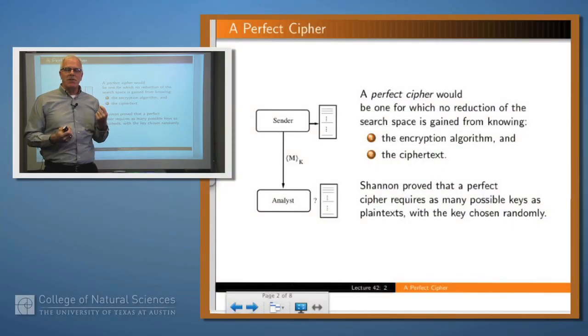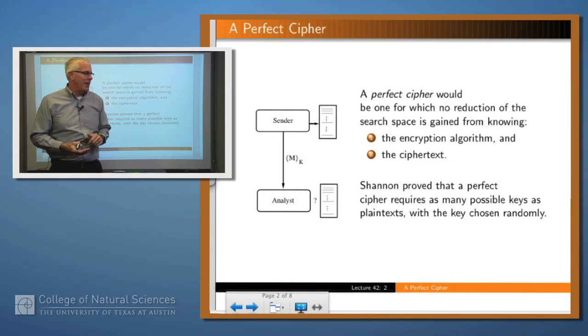Okay, so what was the idea? Well, a perfect cipher would be one where even if you knew the encryption algorithm and the ciphertext, it wouldn't tell you anything about the plaintext. You've got a list of possible plaintexts and you're not able to shrink that down any. Shannon proved that there is such a thing as a perfect cipher, but what he also proved is that such a thing would require that the number of possible keys would be the same as the number of possible plaintexts.